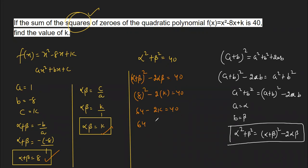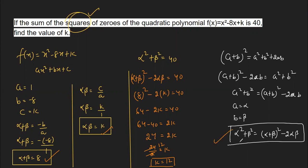Moving terms across: 64 - 40 = 2k, so 24 = 2k, giving k = 12. The most important thing to remember is the formula α² + β² = (α + β)² - 2αβ. Even if you don't recall it you can derive it, but it will take more time, so I recommend you memorize it. I hope you got the solution — thank you very much.